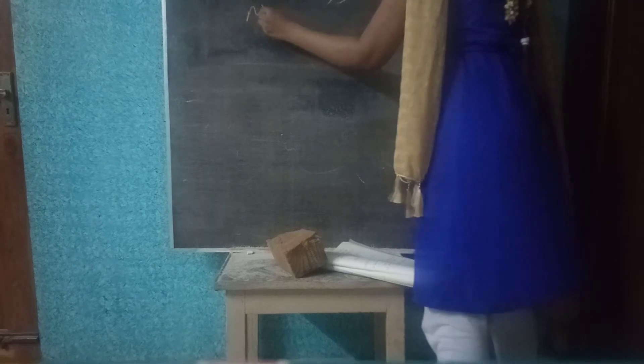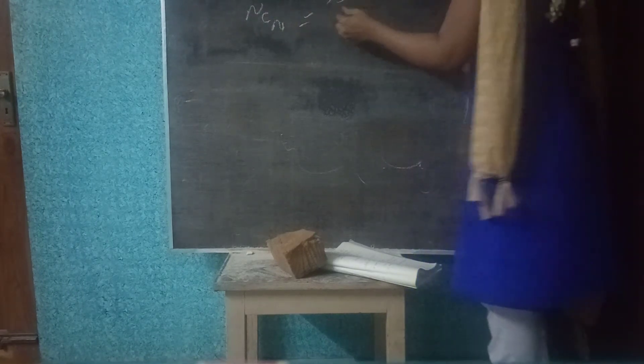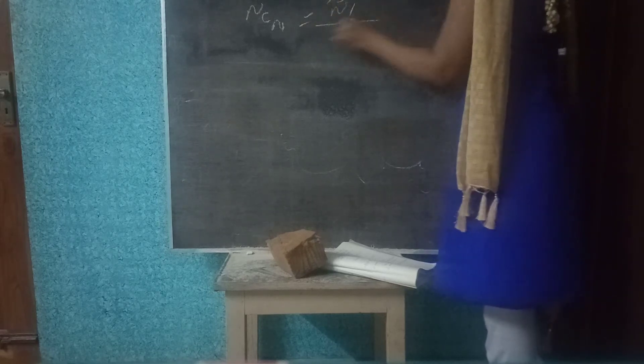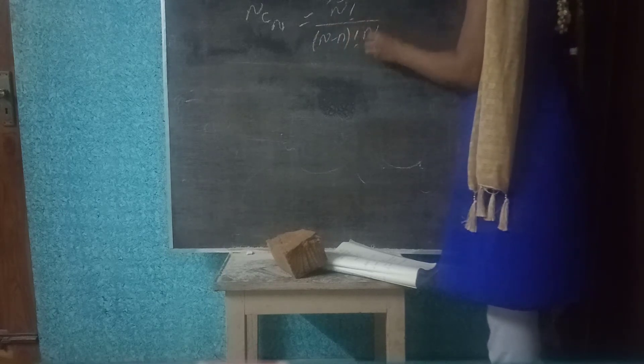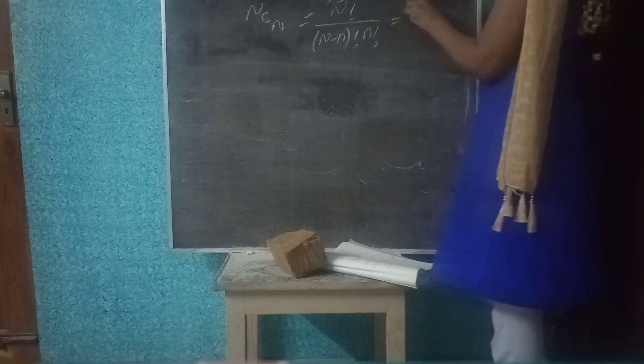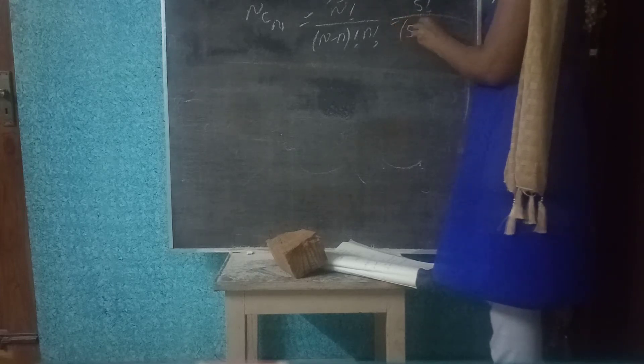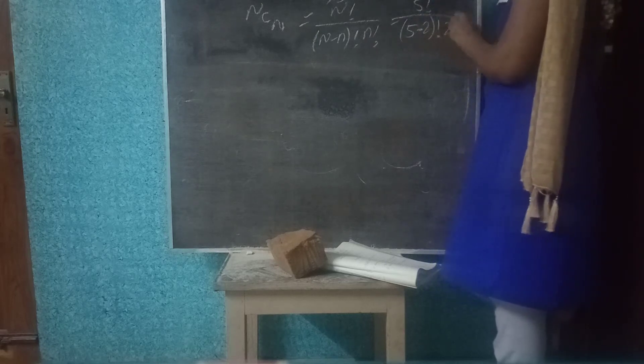Small n is equal to 2. We have to calculate NCn. NCn formula is capital N factorial by capital N minus small n factorial by n factorial. Capital N is 5 factorial, next is 2 factorial, then small n factorial 2 factorial.